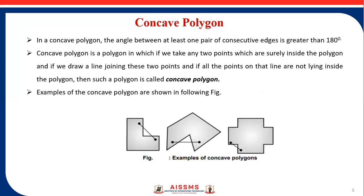Next is concave polygon. In concave polygon, the angle between at least one pair of consecutive edges is greater than 180 degrees. For a concave polygon there always exists a pair of vertices inside the polygon when joined through a line segment, part of the line segment falls outside the polygon.